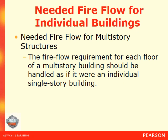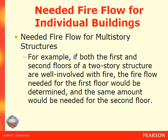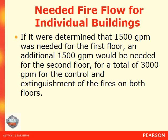The fire flow required for each floor of a multi-story building should be handled as if it were an individual single-story building. For example, if both the first and second floor of a two-story structure are well involved with fire, the fire flow needed for the first floor would be determined, and the same amount would be needed for the second floor. If 1,500 gallons per minute was needed for the first floor, an additional 1,500 gallons per minute would be needed for the second floor, for a total of 3,000 gallons per minute to adequately control the fires on both floors.